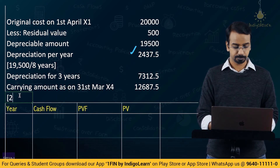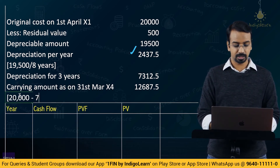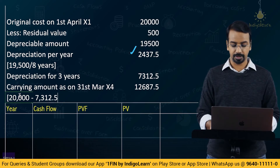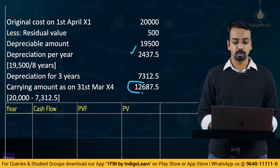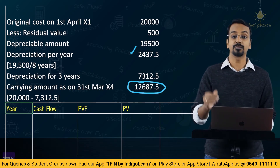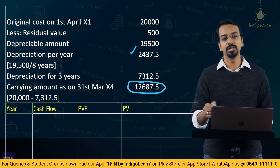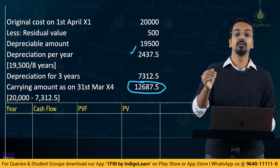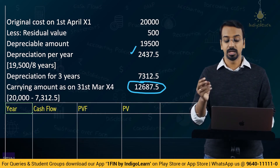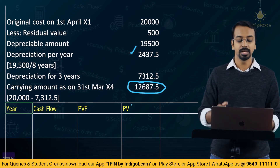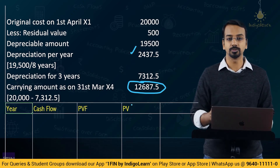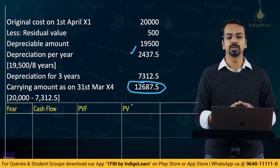Carrying amount as on 31st March Year 4 = 20,000 minus 7,312.5 = 12,687.5. Now we compare this carrying amount with value in use and fair value less cost of disposal. Fair value less cost of disposal is given as 10,000, so that is clearly lower. We now calculate what the value in use is by taking yearly cash flows and discounting at 15%.